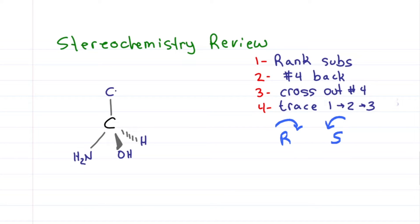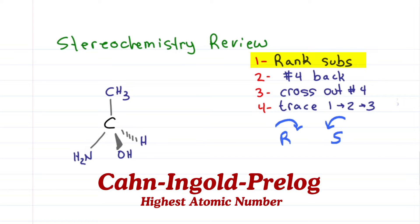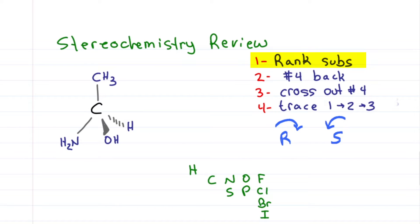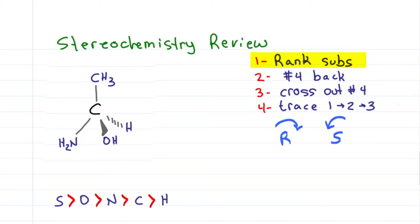Let's try a simple example starting with number one, rank those substituents using the Kahn-Ingold-Prelog system from the highest atomic number. Of the ten atoms I recommend memorizing, amino acids only contain H, C, N, O, S with priority order S, O, N, C, H.